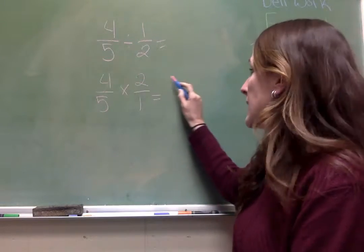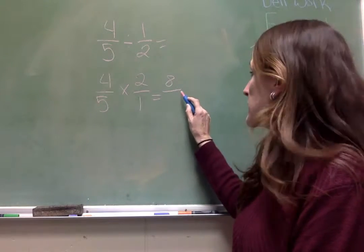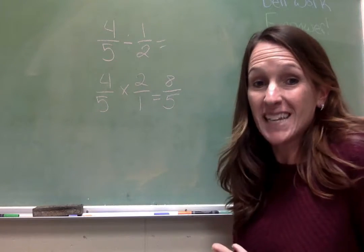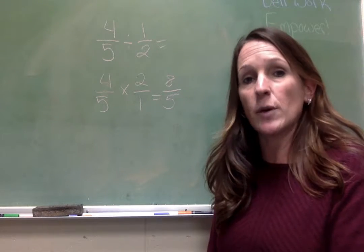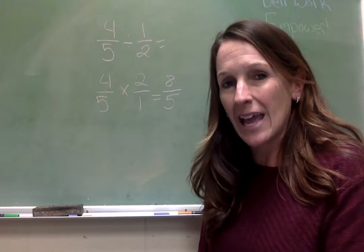4 times 2 is 8. 5 times 1 is 5. That's it. Don't forget, in 7th grade, I'm allowed to have an improper fraction, so 8 fifths is going to stay for us right now.